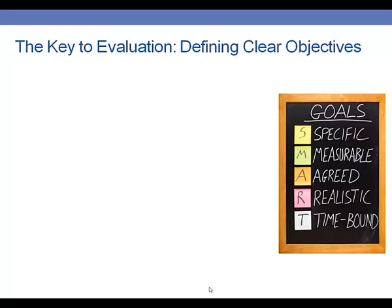You've probably already thought quite a bit about what goals and objectives you have for your programs, but you might not be familiar with the SMART objectives approach — a particular method for writing program objectives that can drastically increase the likelihood that you'll reach the objectives you set. The reason it works so well is that it forces you to make sure your goals are specific, measurable, achievable and agreed upon by your stakeholders, realistic, and time-bound.